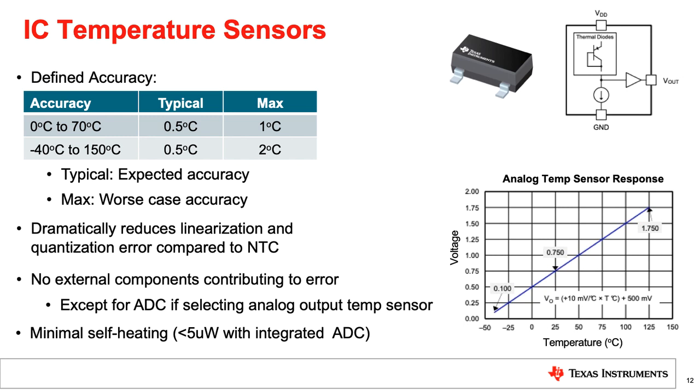When comparing data sheets, it's important to note which value is being listed, typical or max. The linear nature of an IC sensor also dramatically reduces the linearization error and isn't prone to the quantization error at high temperatures compared to an NTC. For a digital temperature sensor where the ADC is integrated, all of these errors are already factored into the device's typical and max accuracy spec. Lastly, IC temperature sensors can provide over a 10x improvement in the power consumption compared to an NTC, thus dramatically reducing the measurement error due to self-heating.